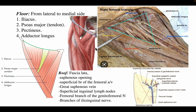You can see the floor muscles present in the femoral triangle. Number one is iliacus, number two is psoas major tendon, number three is pectineus, and number four is adductor longus. All these muscles form the floor of the femoral triangle, as also shown in the diagram.